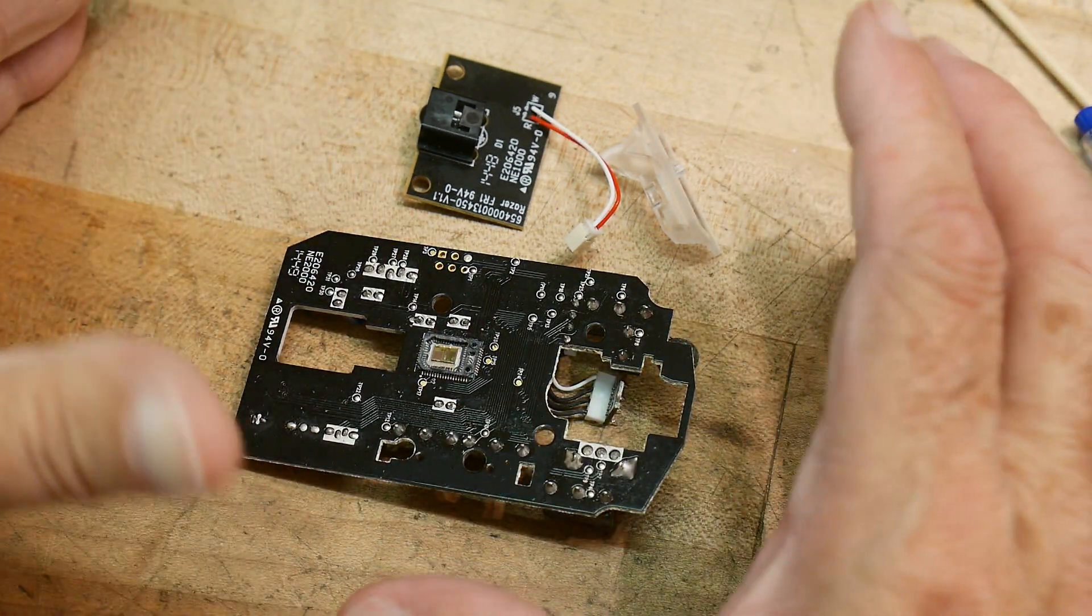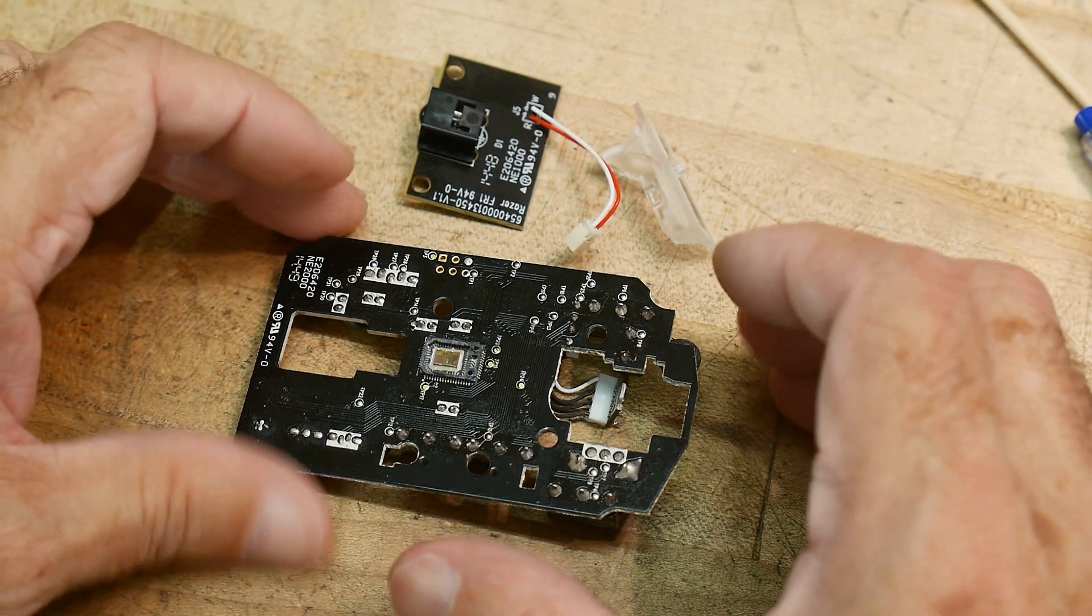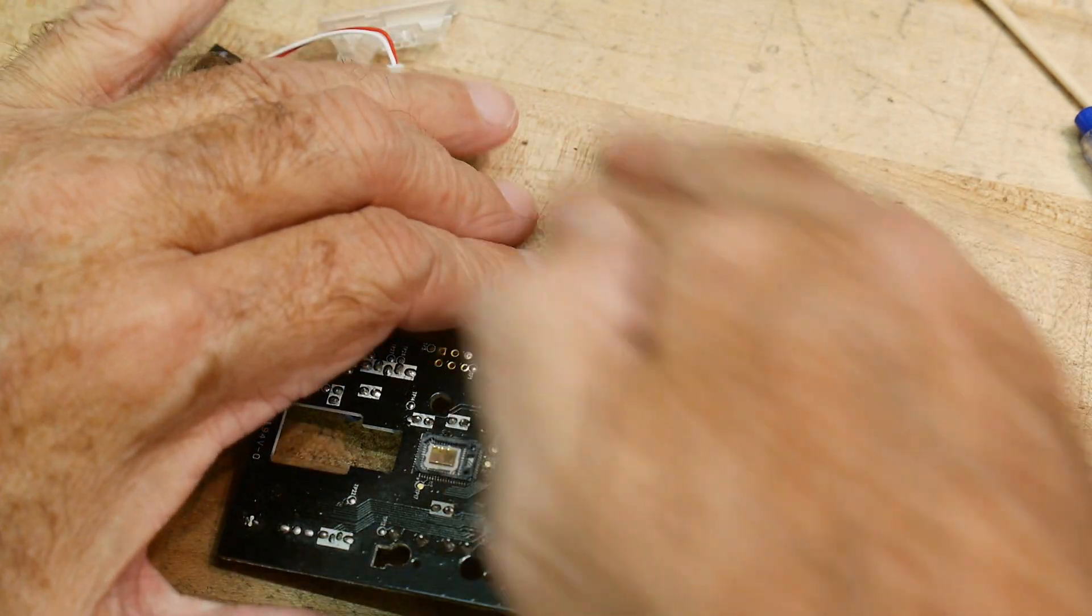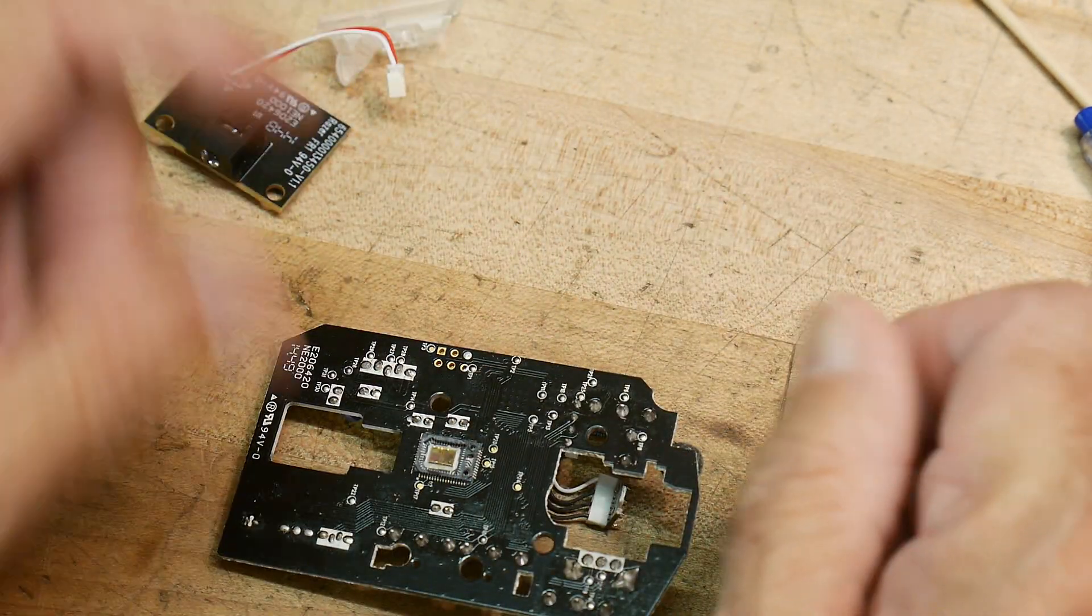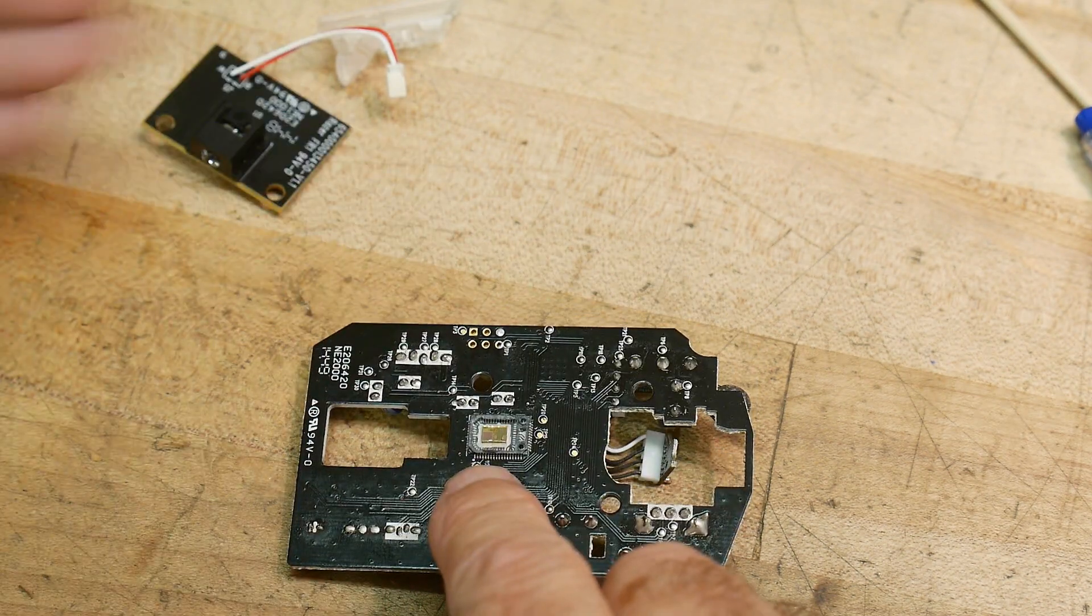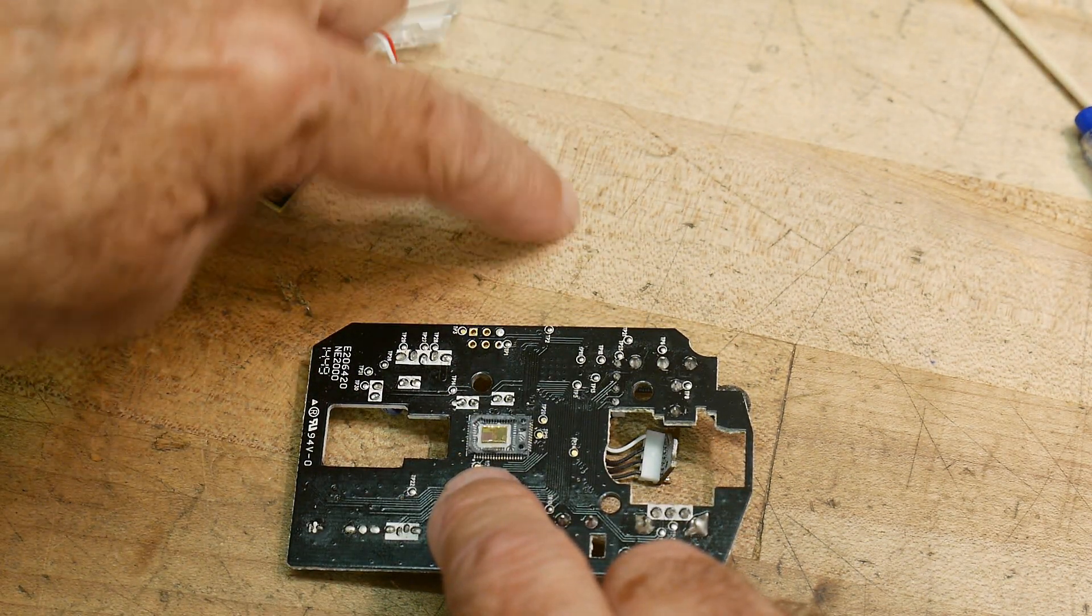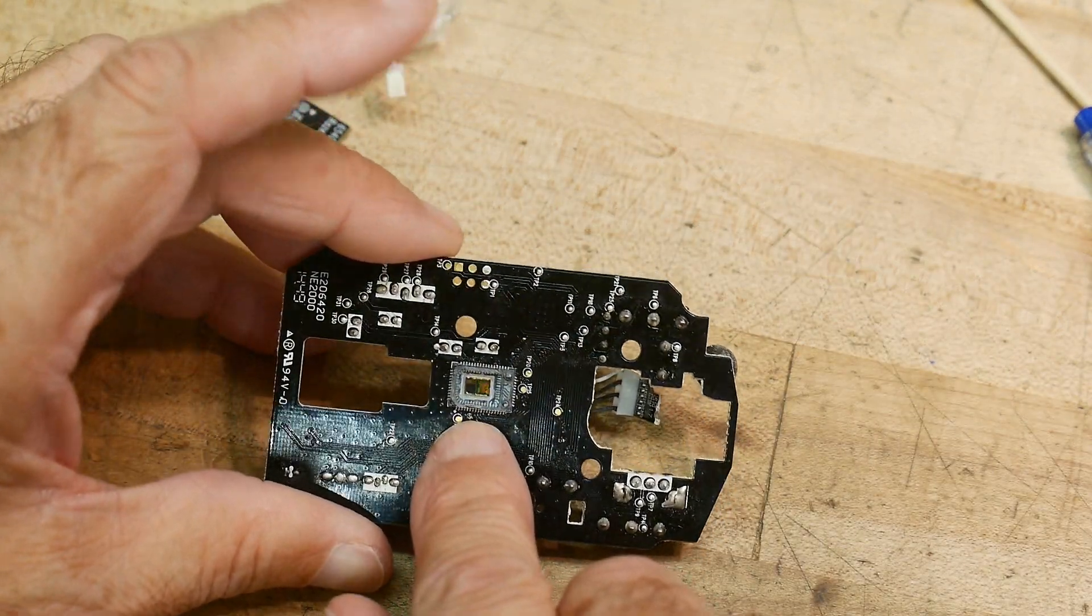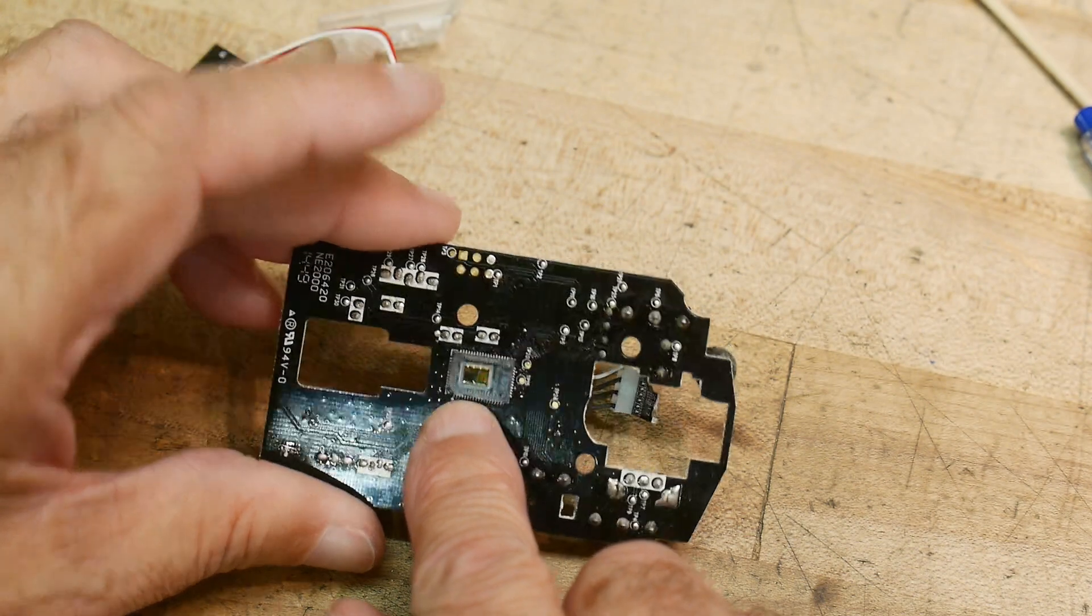So there's basically two main components. One is a light source that shines light on the desktop if you're going to mouse on top of your desktop. And then the other is a detector. So light comes out, bounces off the mouse pad, and then it enters the detector. So what is the detector?